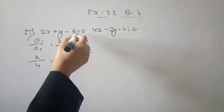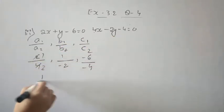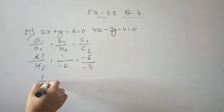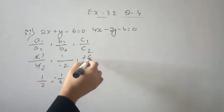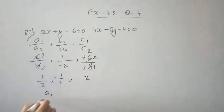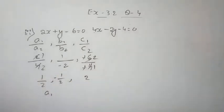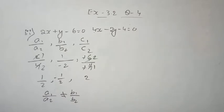So a1 is 2, a2 is 4, b1 is 1, b2 is minus 2, c1 is minus 6, c2 is minus 4. Therefore a1 upon a2 is 1 upon 2, b1 upon b2 is minus 1 by minus 2 which is also 1 by 2, and c1 upon c2 is minus 6 by minus 4. So a1 upon a2 is not equal to b1 upon b2 — wait, here a1/a2 equals b1/b2 but not equal to c1/c2.